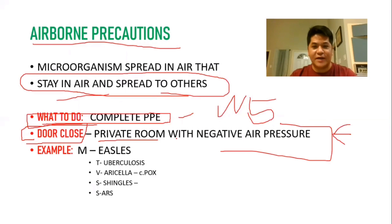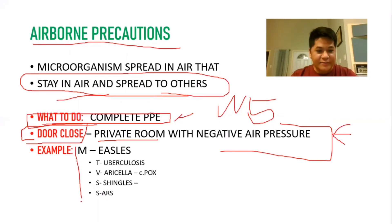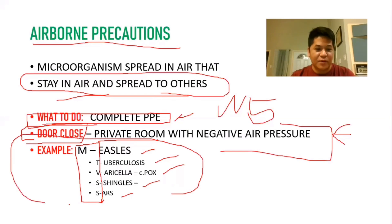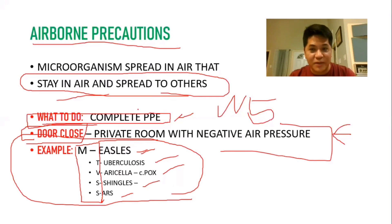The nurse or healthcare worker must wear complete PPE. The mnemonic for airborne diseases is MTVSS: Measles, Tuberculosis, Varicella (chickenpox), Shingles, and SARS. They always ask questions with a scenario about these diseases. Remember: complete PPE, private room, and negative air pressure for airborne precaution clients.